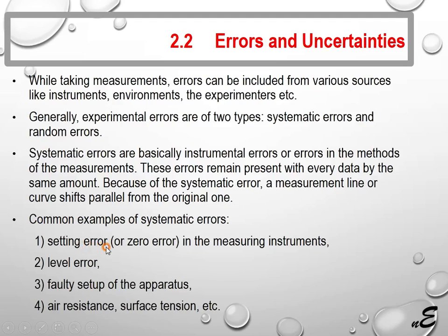Common examples of systematic errors: setting error or zero error in the measuring instruments, level error, faulty setup of the apparatus, air resistance, surface tension, etc.